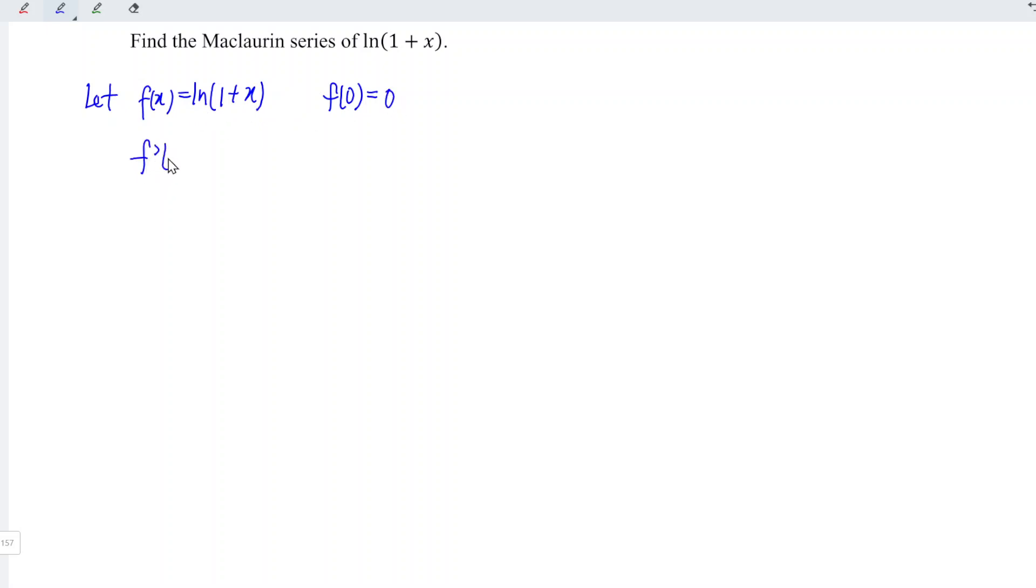Differentiate for the first time, we obtain 1 over (1 + x). And at point x equals 0, we have 1.